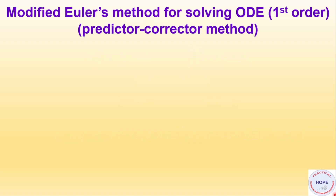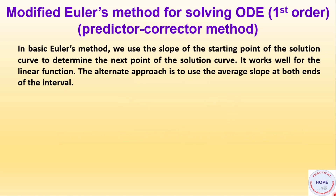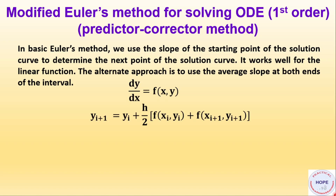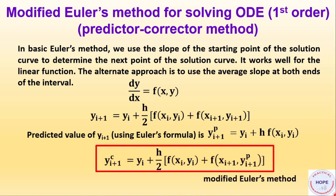Now let's look at the modified Euler's method for solving a first-order ODE, also called the predictor-corrector method. In basic Euler's method we use the slope at the starting point, which works well for linear functions. The modified approach uses the average slope at both ends of the interval: y(i+1) = y(i) + (h/2)·[f(x(i), y(i)) + f(x(i+1), y(i+1)_predicted)], where the predicted value is y(i+1)_p = y(i) + h·f(x(i), y(i)).